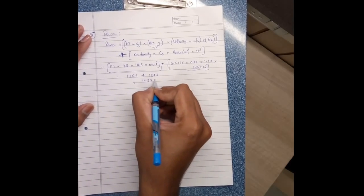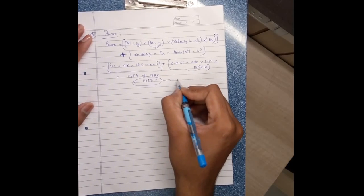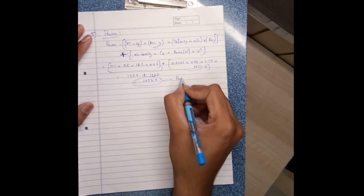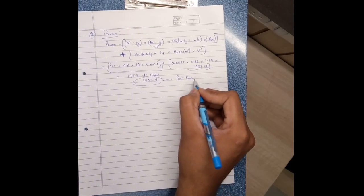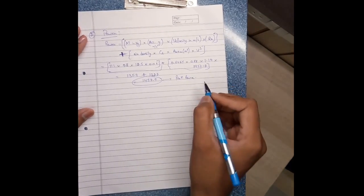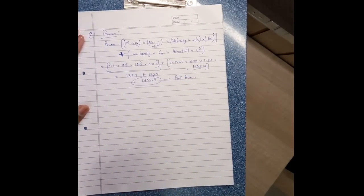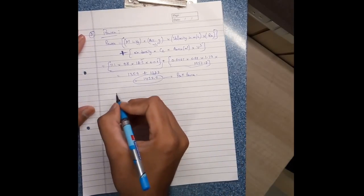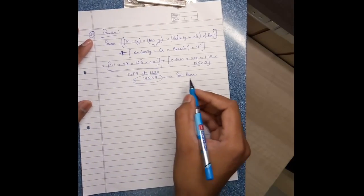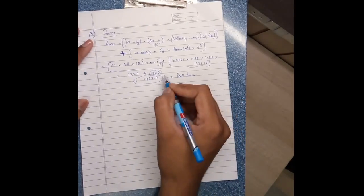So this is a peak power or we can say maximum power that is required at 12.5 meter per second, means at 45 kilometer per hour. For accurate value we take this or close to these values. These are only approximations, this value equals to 1459.